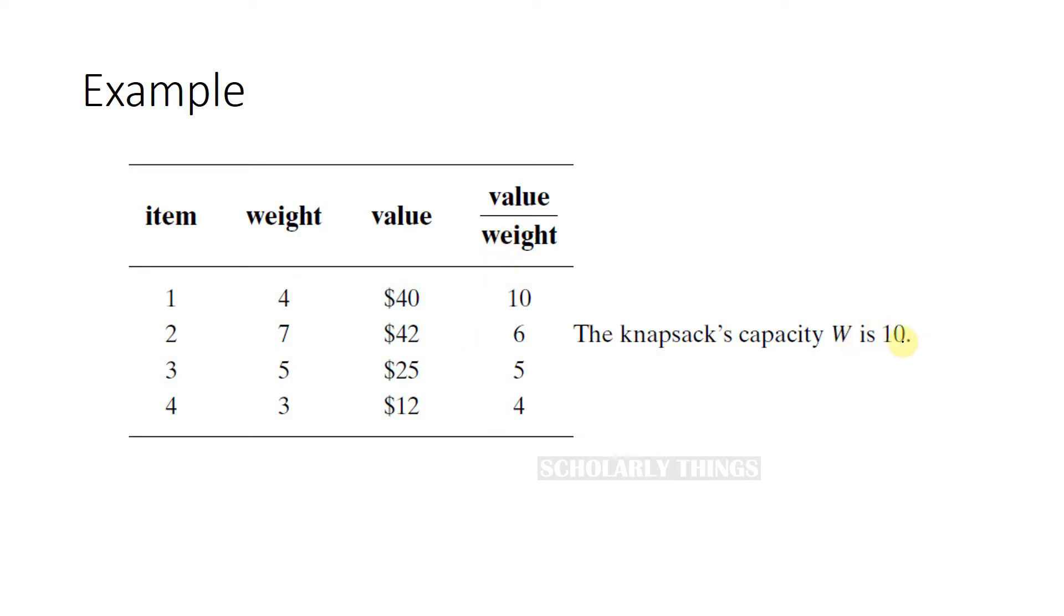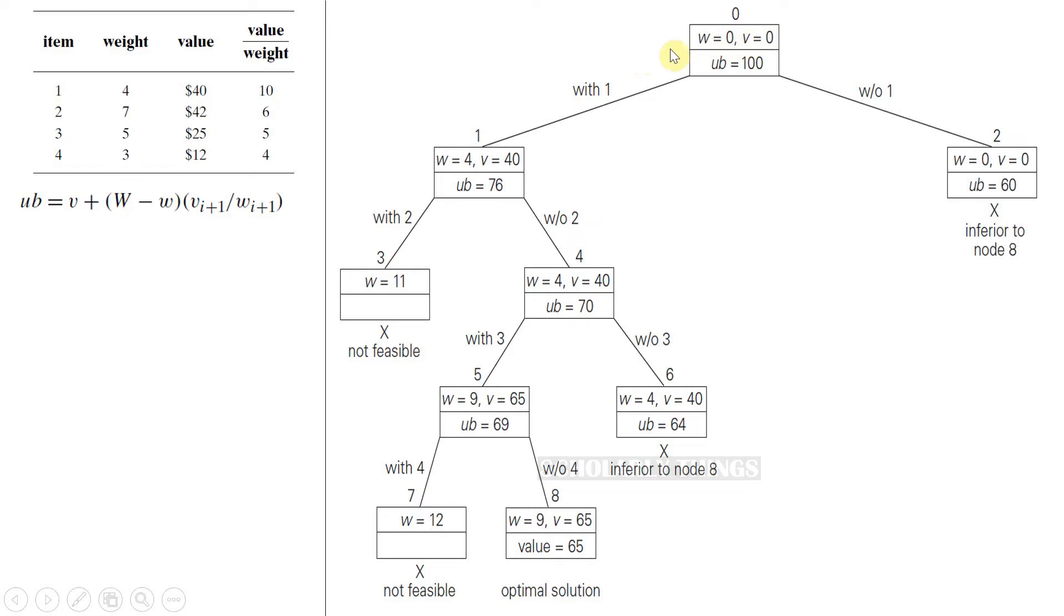The knapsack capacity is given as 10 and these are the items, their weights, and their respective values. At node 0 no items are selected. Next, in the left branch we include the first item. Weight of first item is 4 and the value is 40. Let's calculate the upper bound for this node: 40 plus capacity of knapsack is 10 minus weight of this item is 4, and the value by weight ratio for i plus 1 is 6. So the upper bound value for this node is 76.